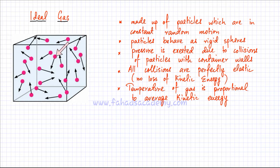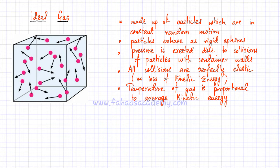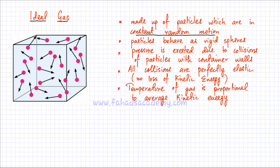So this particle over here is moving in this direction, this particle is moving in that direction, this one is going to the right, and this one is going to the left. They are constantly moving around in a random fashion. This is one way to figure out whether the particles are in a gaseous state or whether they are in a liquid or solid state.